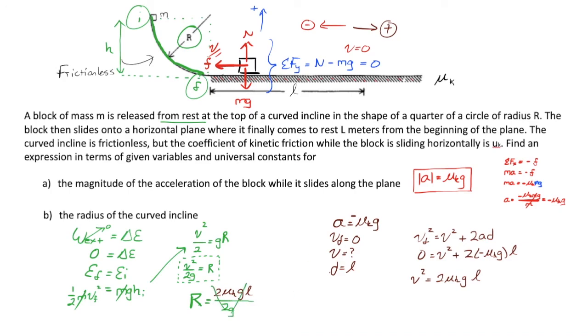We have a few cancellations there. Ultimately, the radius equals mu k L. What a bizarrely elegant solution. And I like it very much.